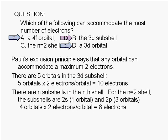The nth shell of an atom consists of n subshells. The second shell has two subshells: 2s, which consists of one orbital, and 2p, which consists of three orbitals. Therefore, the second shell has a total of four orbitals and can accommodate a maximum of eight electrons. Four orbitals times two electrons per orbital equals eight electrons.